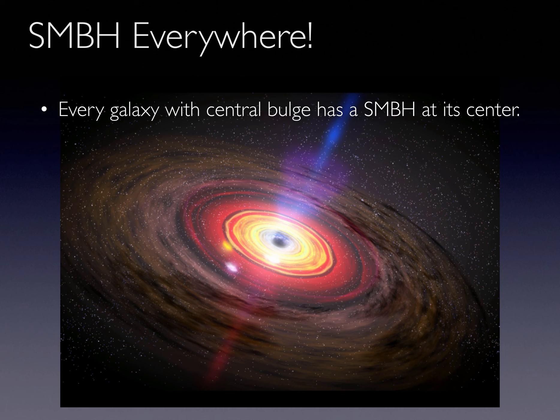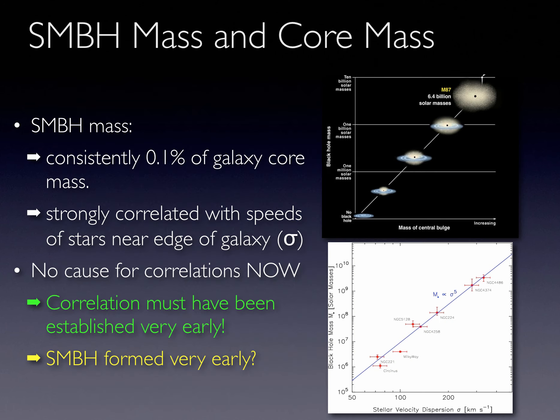In active galaxies, supermassive black holes are feeding, creating hot quasars at their centers and creating bipolar jets of material that has been accelerated to speeds approaching the speed of light. Astronomers have discovered that a supermassive black hole's mass and both the outer star speeds and the central bulge mass of the host galaxy are tightly correlated, even though there is no significant physical connection today.